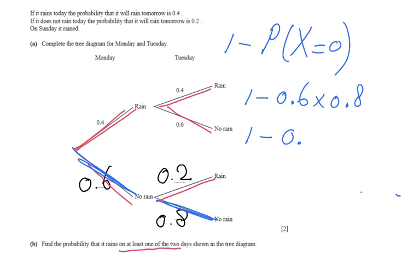So the chance that in two days it will not rain is 0.48, so the chance that it will rain on at least one of the two days is 1 minus 0.48, which is going to be 0.52 - which is, if you like, 52 percent.